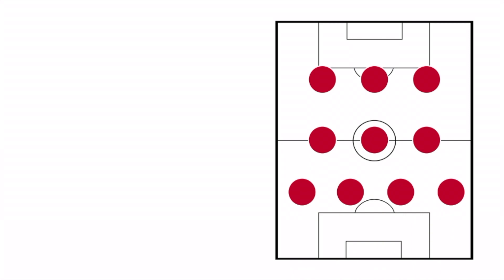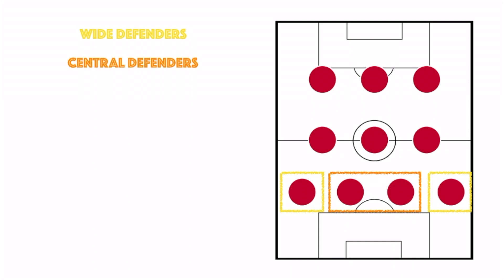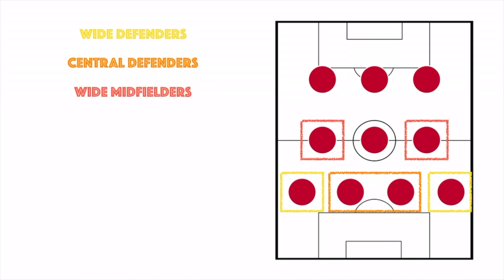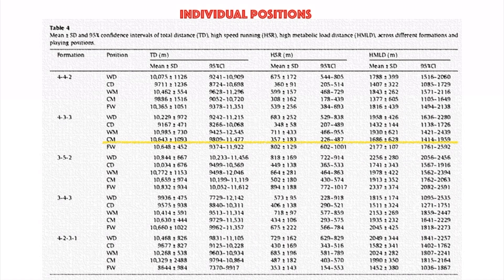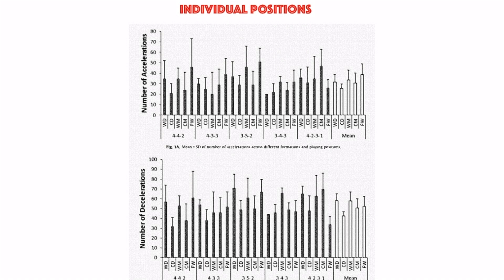Physical data were also examined at individual positions: wide defenders, central defenders, wide midfielders, central midfielders, and forwards. Results show that central midfielders covered greater distance in the 4-4-3 formation. Forwards had higher speed running in the 3-5-2. Central midfielders covered greater high metabolic load distance in the 4-3-3. Wide midfielders and forwards both performed a greater number of decelerations in the 3-5-2 formation.